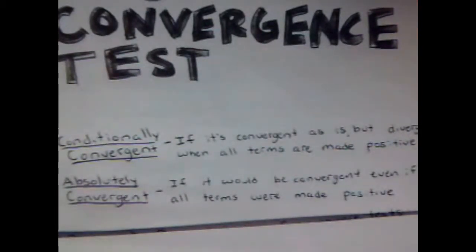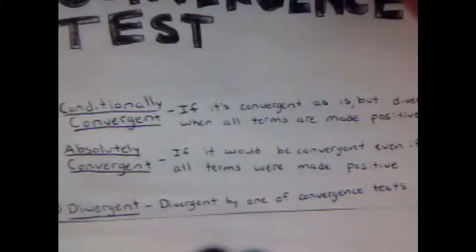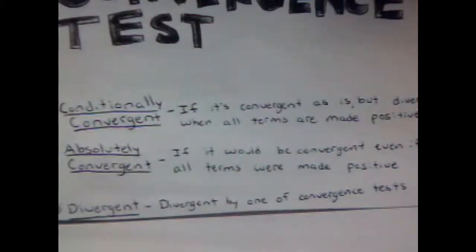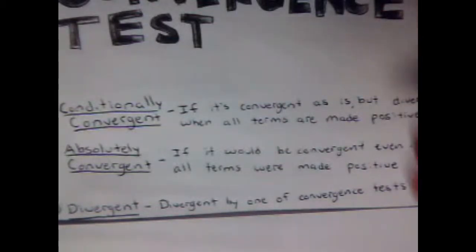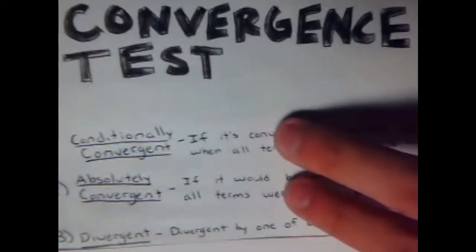I'll explain why that makes sense later. The third outcome, and the easiest, is Divergent — meaning it diverges by one of the convergence tests. So you do a Limit Comparison Test, it comes out divergent, and neither of the first two outcomes will be true.